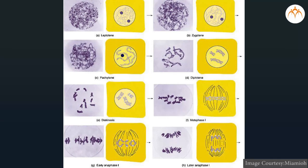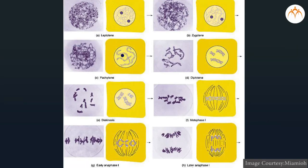Metaphase 1: homologous chromosomes get arranged at the equatorial plane of the cell. Spindle fibers arise in the cytoplasm and get attached to the centromeres of the chromosomes. Anaphase 1: homologous chromosomes migrate to opposite poles of the cell. This is called disjunction.